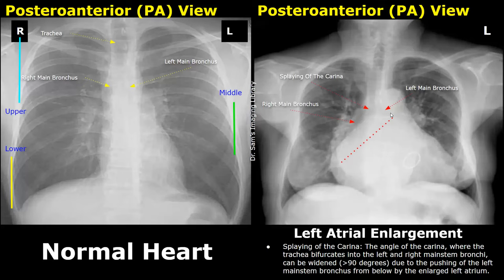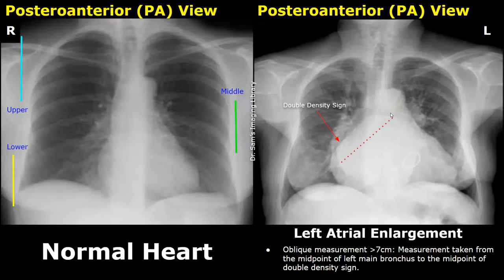Another feature is an oblique measurement taken from the midpoint of the left main bronchus to the midpoint of the double density sign. This measurement will be greater than seven centimeters in cases of significant left atrial enlargement.